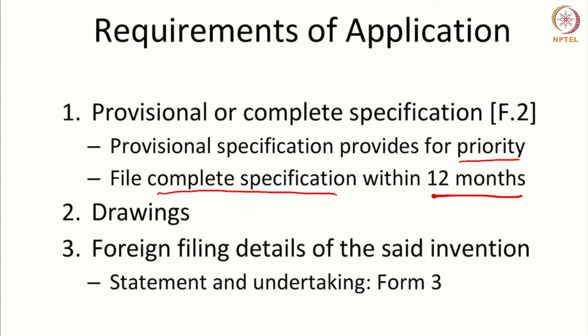The third thing that you need to provide to the patent office while filing an application is details with regard to foreign filing. If you had filed an application in India and followed it up with applications around the world, then you need to keep the Indian patent office informed as to the position of those applications. The patent office would like to know how other patent offices are dealing with the same application. There is a statement of undertaking under Form 3 which an applicant has to file.